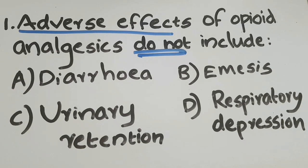We know opioid analgesics are mainly used for relieving severe pain, for example in terminal stages of cancer. They act by binding to various receptors present in the brain called opioid receptors. The main categories of opioid receptor include mu, kappa, and delta.